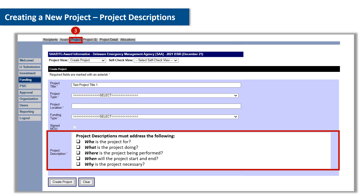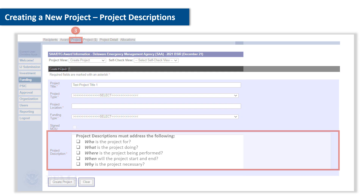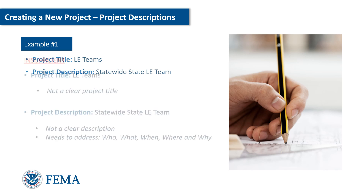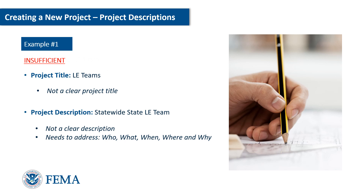Let's take a look at a few examples of common errors in project descriptions and how to resolve them. Take a look at example number one on screen. This is insufficient — the project title isn't clear and the project description does not address the five questions: who, what, when, where, and why.